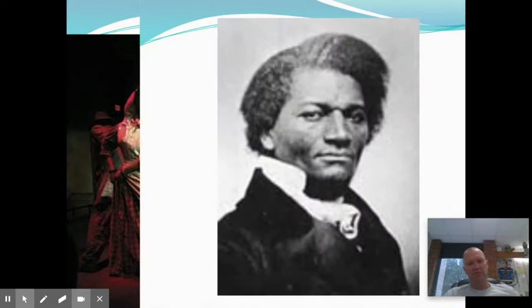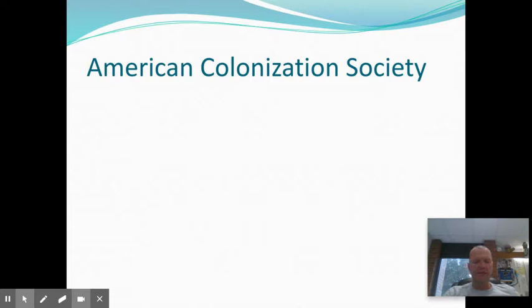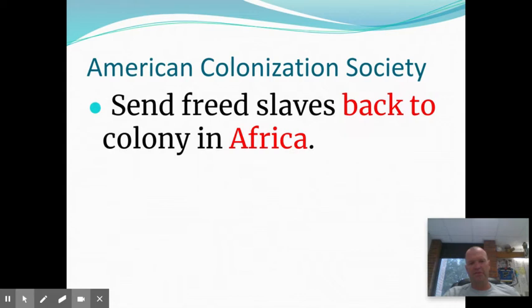Some people started to say, yeah, I don't know about this — this doesn't seem like it's okay. Those people were called abolitionists because they wanted to abolish slavery and get rid of it. This guy — that's Frederick Douglass, an African American who escaped slavery. We'll talk about him in just a minute. Before we do that, we'll talk about this.